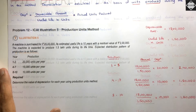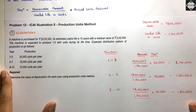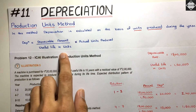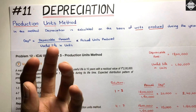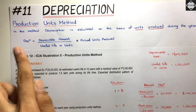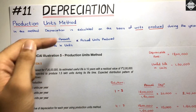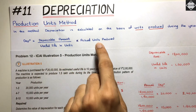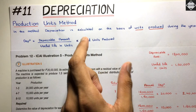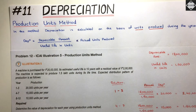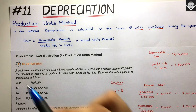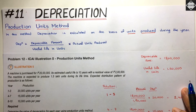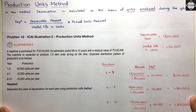To summarize: take the depreciable amount, divide by useful life in units to get depreciation per unit, then multiply by actual units produced in that accounting period — and you get the depreciation for that year or quarter. It's really simple and straightforward. That's all for this video; see you in the next one.